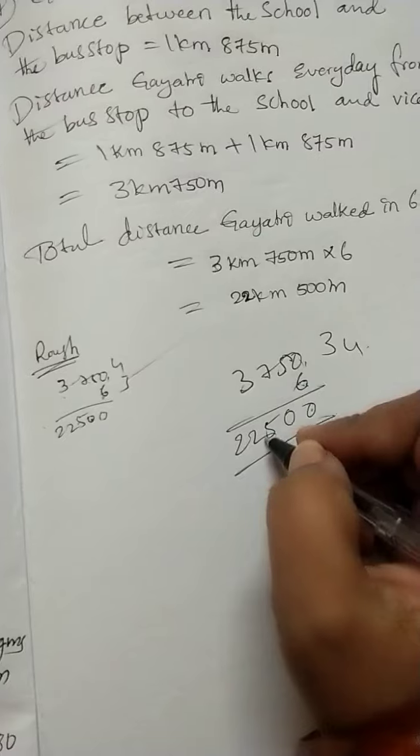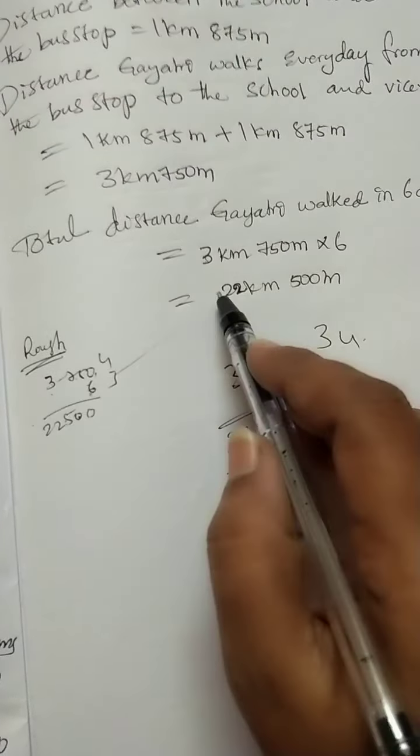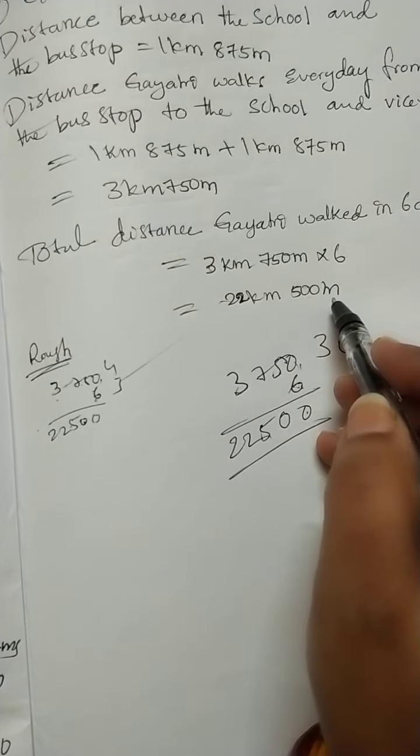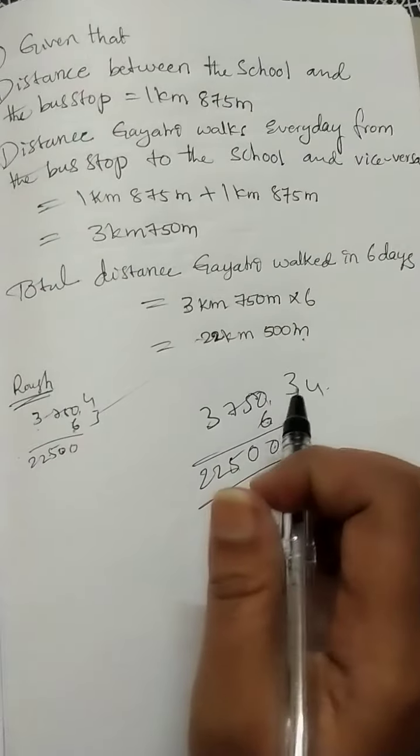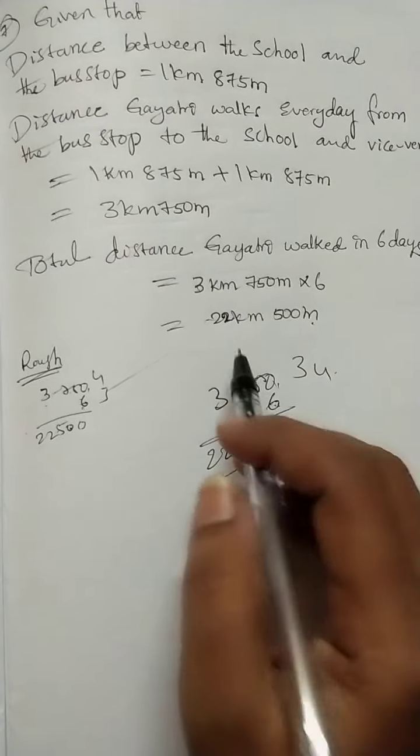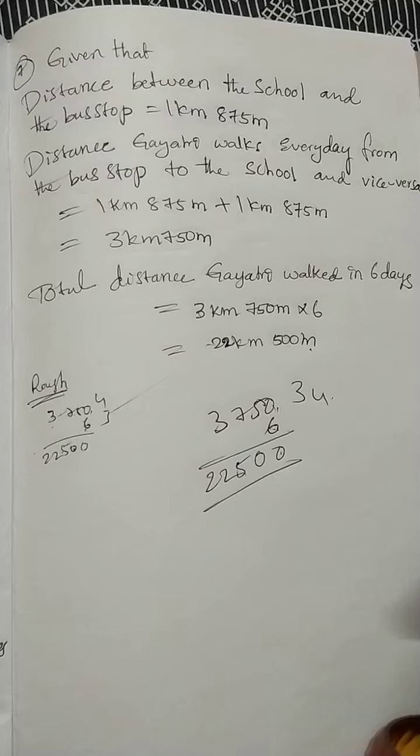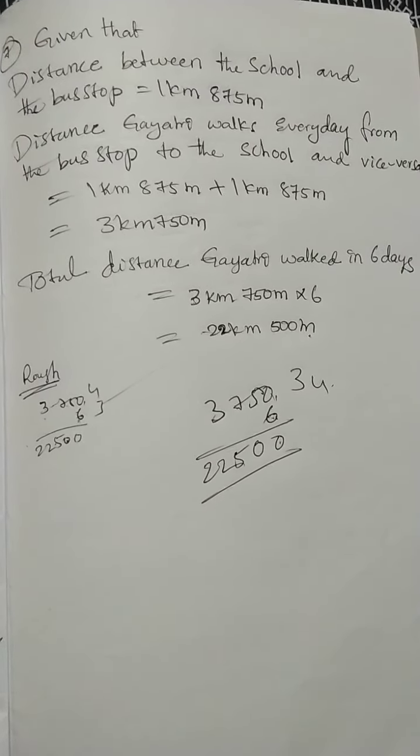We will get 22 km 500 meters. Gayathri walks for 6 days, covering 22 km 500 meters total. Very simple.